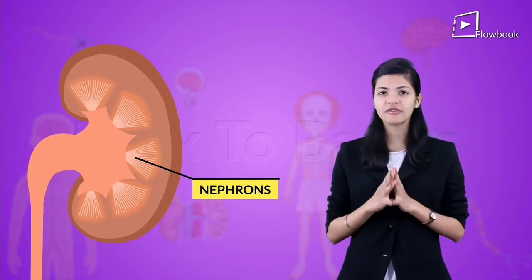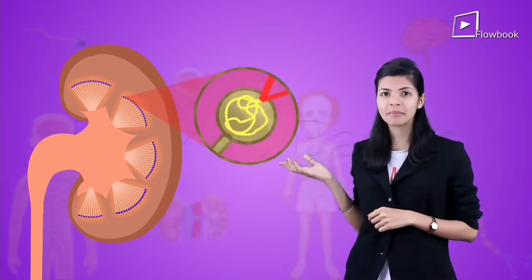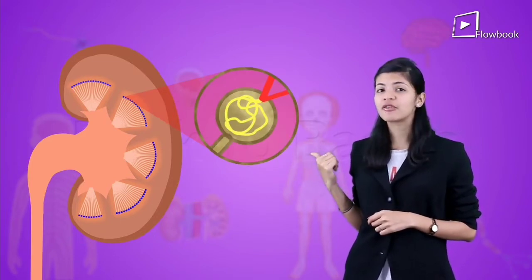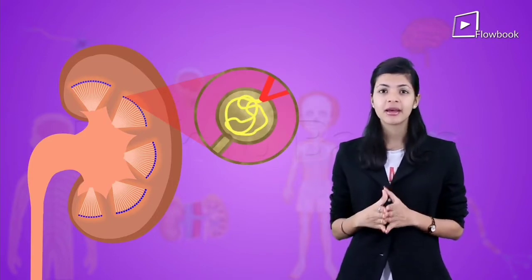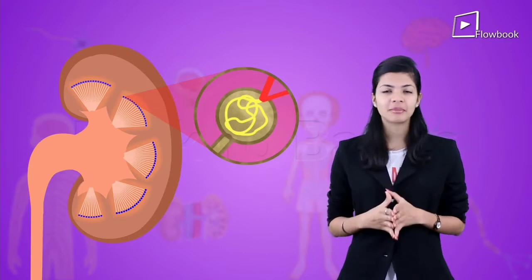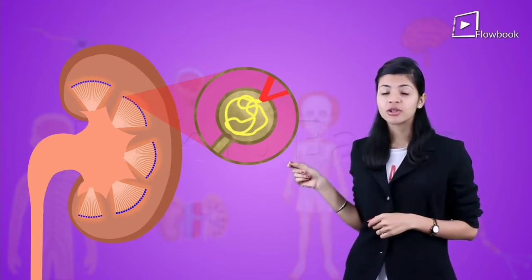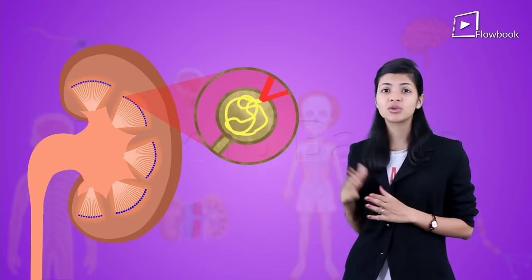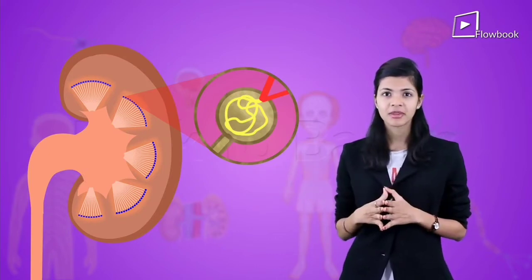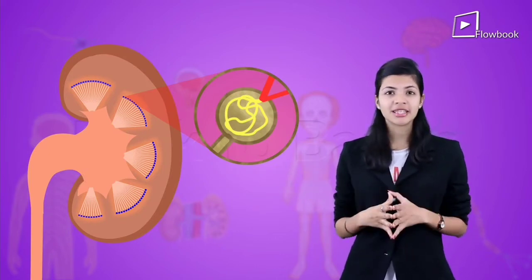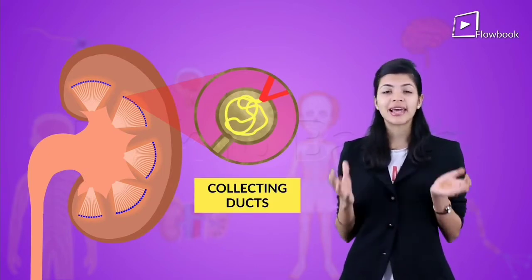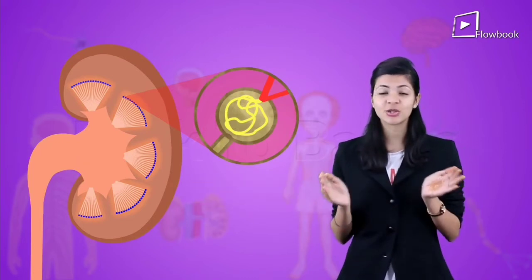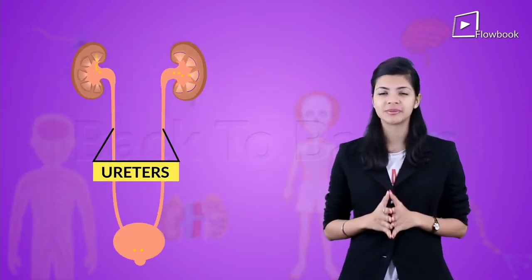The nephrons have a Bowman's capsule, which is a cup-like structure where the nephron originates. The Bowman's capsule goes on to become a tubule which is narrow in width and also twisted towards the end. All of these open into collecting ducts, and all these collecting ducts unite and open into a ureter.